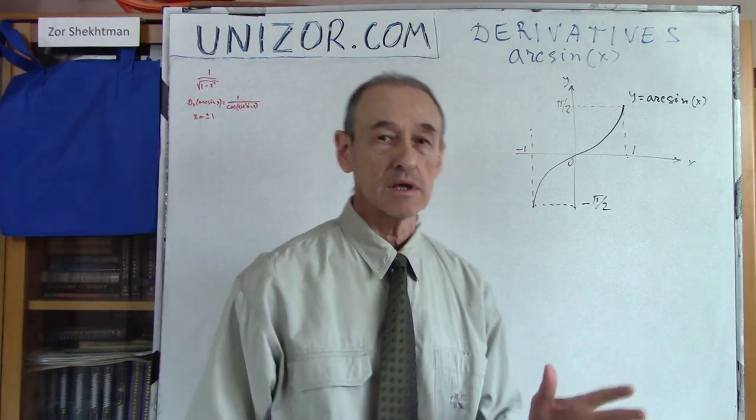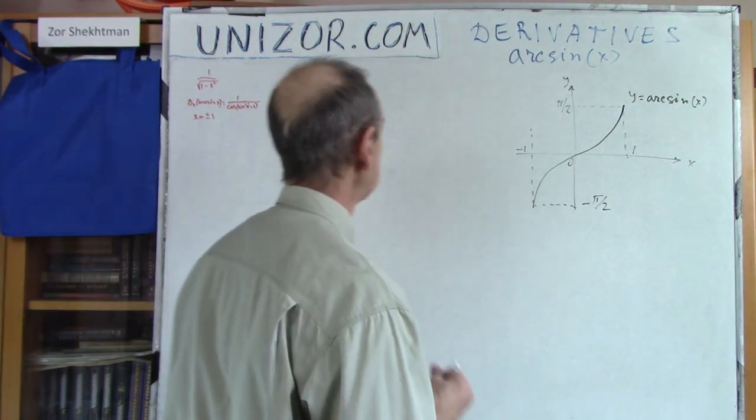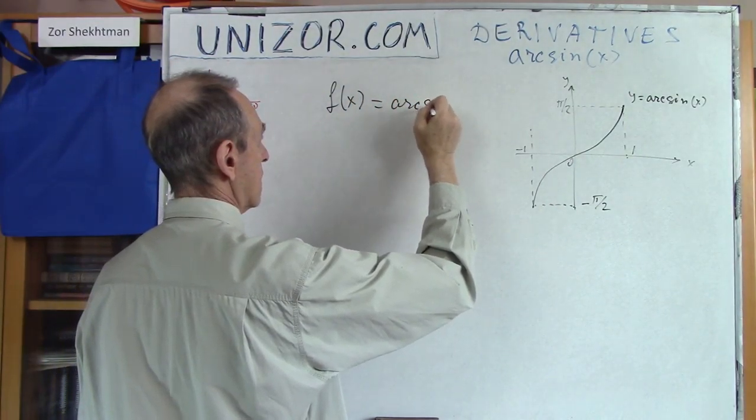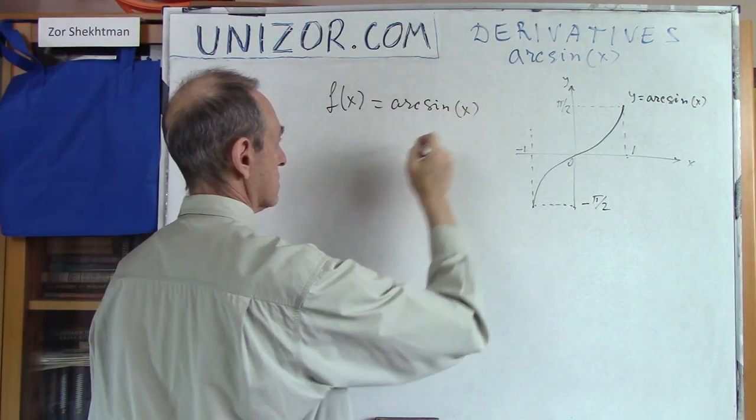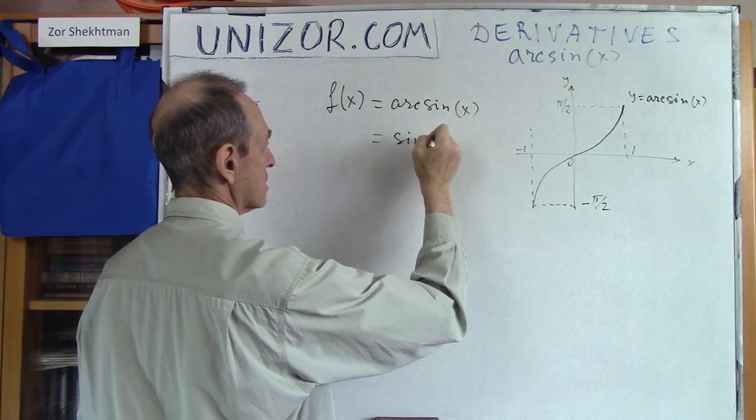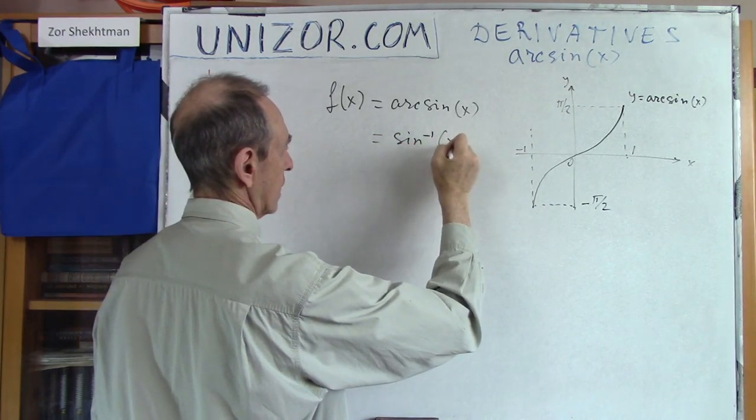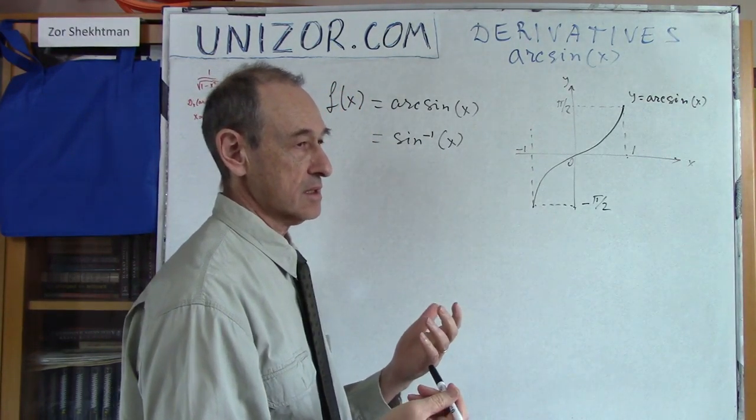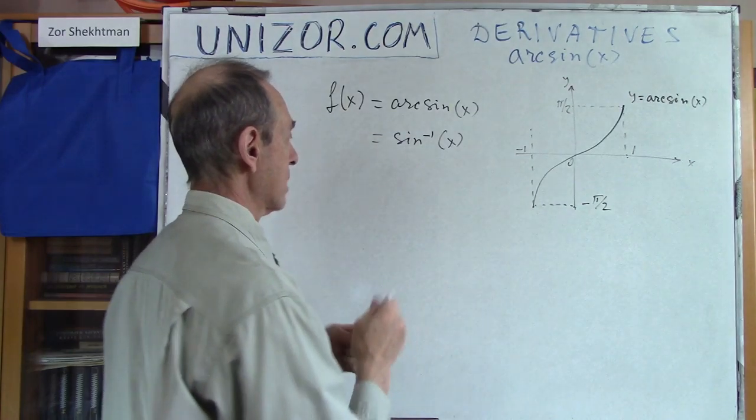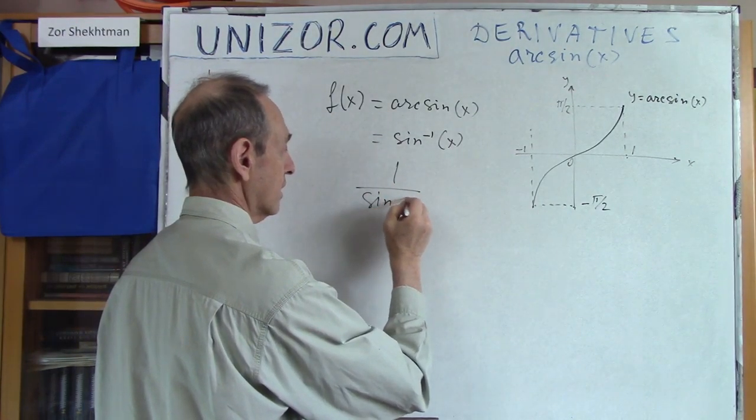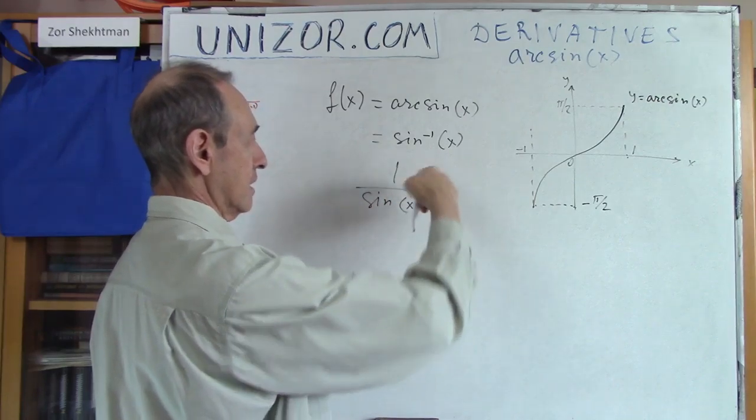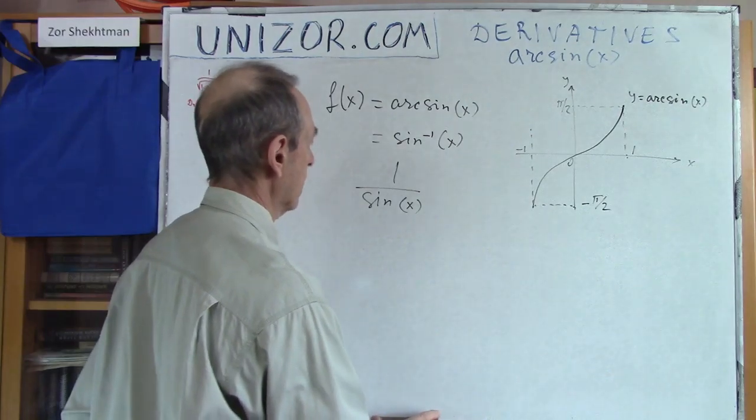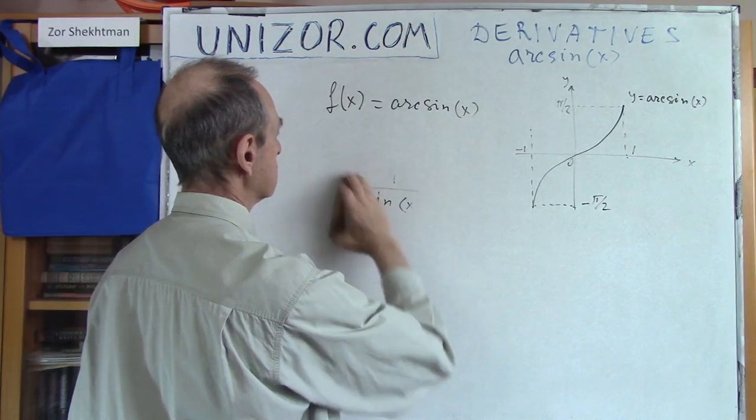My problem right now is to take a derivative of the function arcsin(x). Sometimes the notation is sine to the minus 1 of x. I prefer not to use this notation because sometimes it means arcsine, sometimes it might mean sine to the power of minus 1, which is reciprocal. So let's forget about this. I will use arcsine.